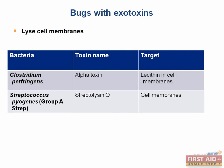Strep pyogenes produces two exotoxins with different mechanisms. One is streptolysin O, a hemolysin that leads to red blood cell lysis. When grown in blood, you will see complete lysis of RBCs. The body makes antibodies against streptolysin O — anti-streptolysin antibodies, or ASO. To diagnose rheumatic fever, we often check serology for ASO antibodies. Note that hemolysis does not occur in patients infected with beta-hemolytic streptococci, only in agar.